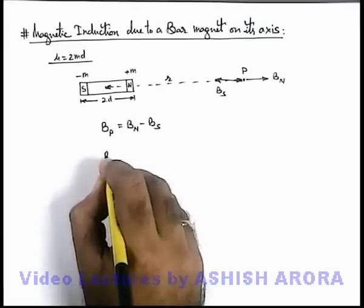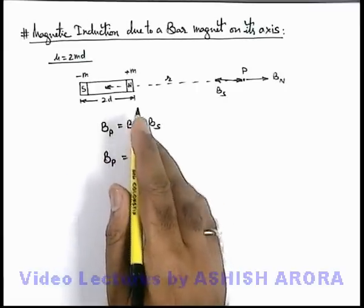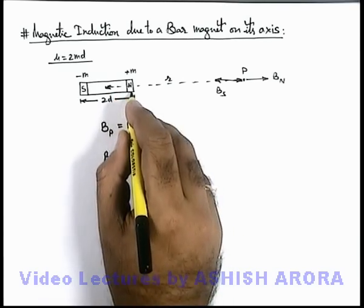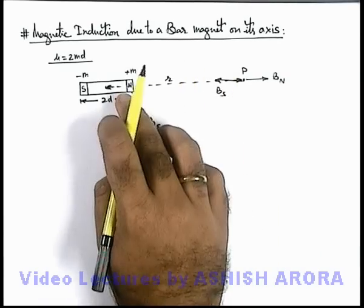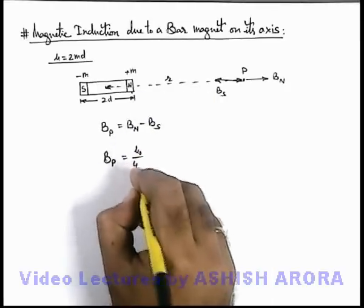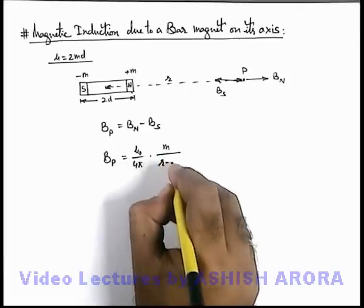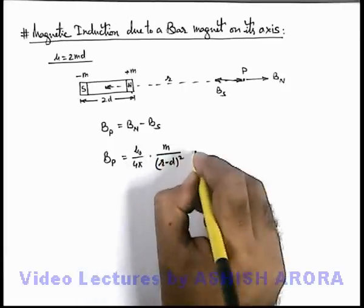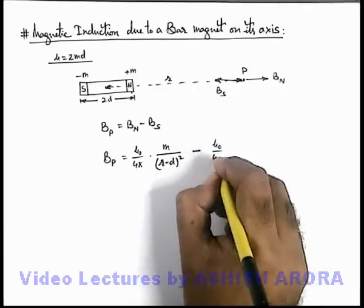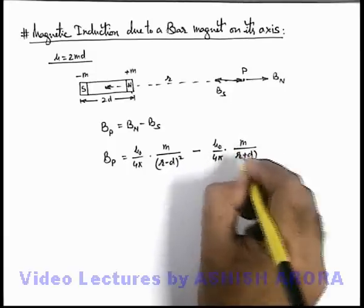Now if we use the results of magnetic induction due to an individual unipole, we can write due to this north pole, which is at a separation r minus d from point P, as mu_0 over 4π times m over (r-d)², minus due to the south pole, mu_0 over 4π times m by (r+d)².